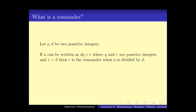Now let's move on to the next thing. This is again something we must have seen in elementary or middle school: the notion of remainder. If a and d are two positive integers, then a can be written as d times q plus r, where q is a positive integer and r is strictly less than d. Note that there is a unique way of writing a as dq plus r where r is strictly less than d. When we can write it this way, we say r is the remainder when a is divided by d.